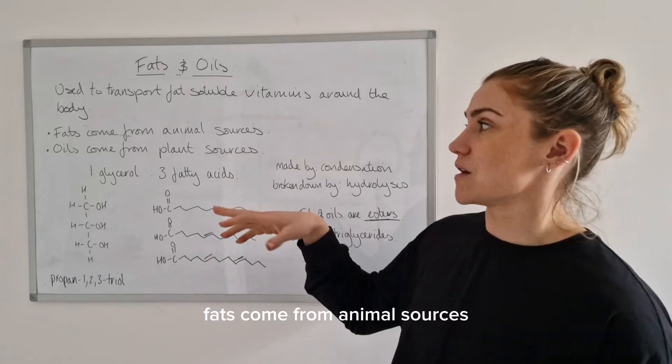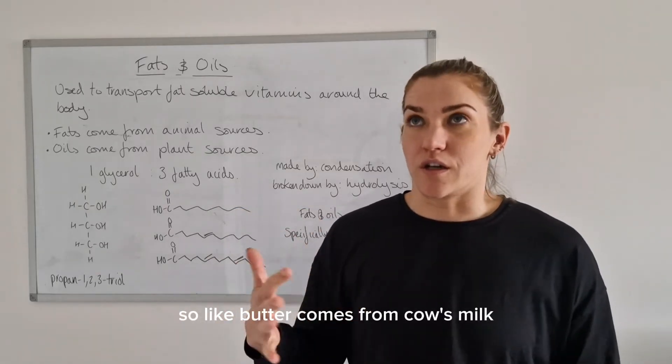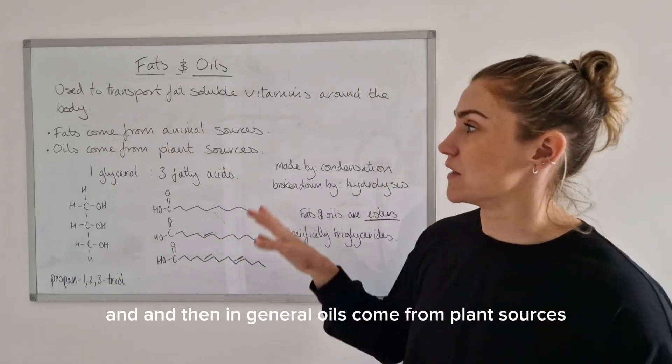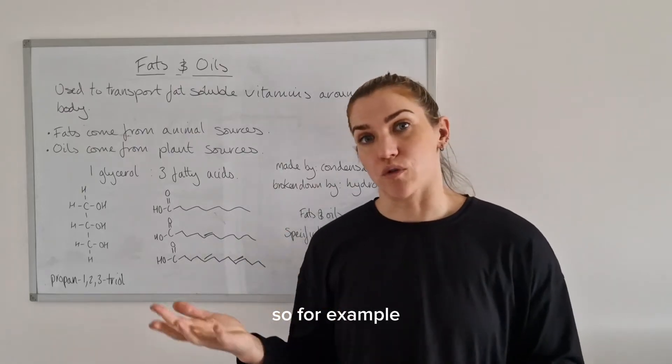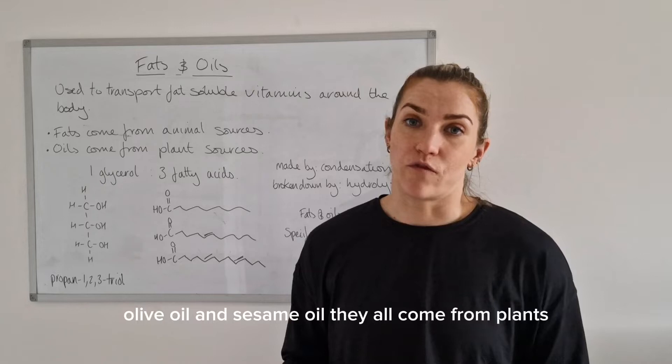In general, fats come from animal sources, so like butter comes from cow's milk or sheep's milk or goat's milk. And in general oils come from plant sources, for example coconut oil, olive oil, sesame oil - they've all come from plants.